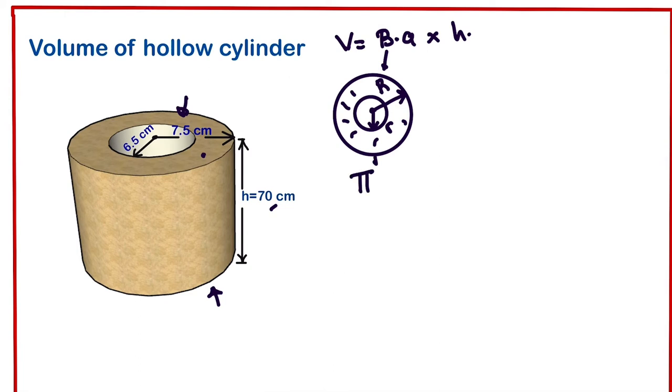If we want to get this area, we have to subtract the area of the internal circle, which is πr² as well. What is common here? We can factorize π, and we'll be left with π(R² - r²). This formula represents the base area.